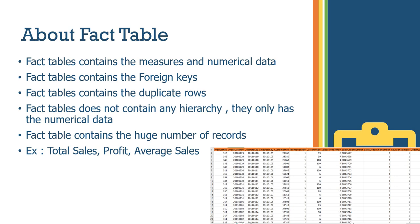The fact table does not contain any hierarchy — it only has numerical data. There is a hierarchy in the dimension tables. For example, country, state, and city form a hierarchy in a dimension table.